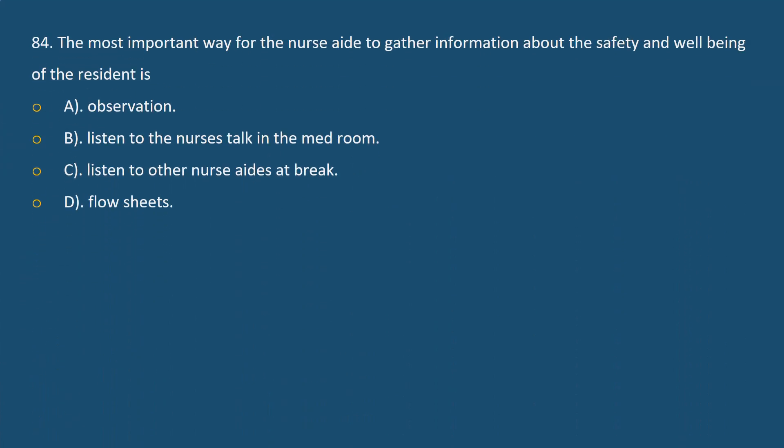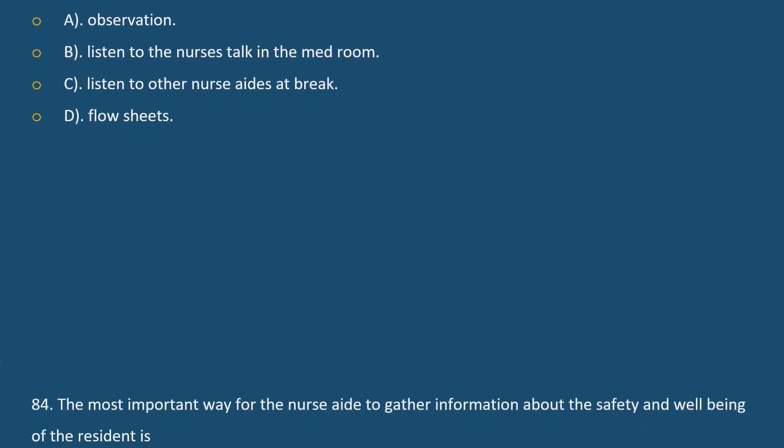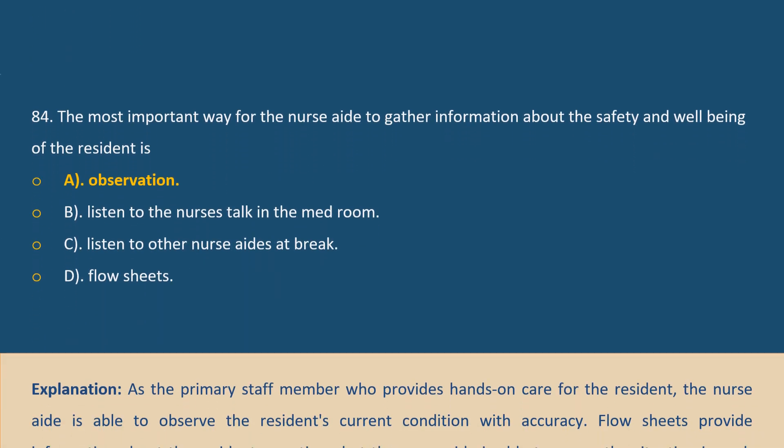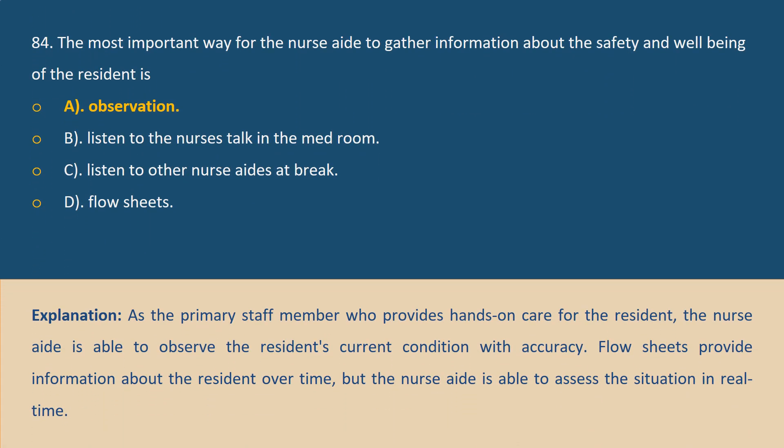Question 84: The most important way for the nurse aide to gather information about the safety, quality, and well-being of the resident is: A. Observation, B. Listen to the nurse's talk in the med room, C. Listen to other nurse aides at break, D. Flow sheets. Answer A. Explanation: As the primary staff member who provides hands-on care, the nurse aide is able to observe the resident's current condition with accuracy. Flow sheets provide information over time, but the nurse aide can assess the situation in real time.